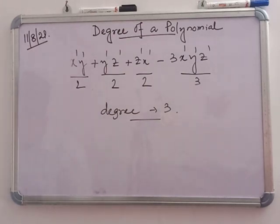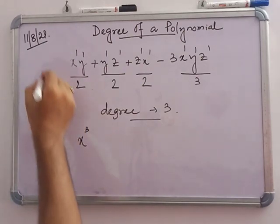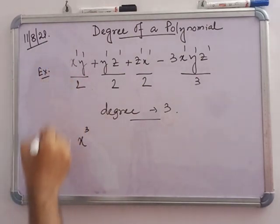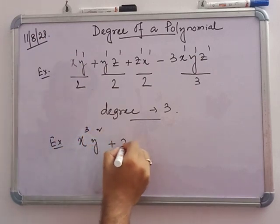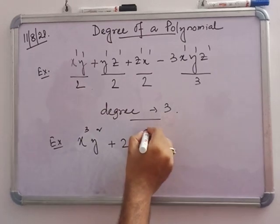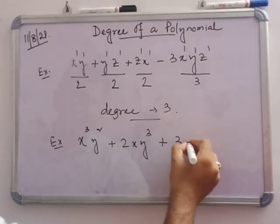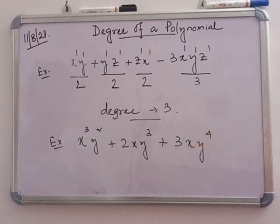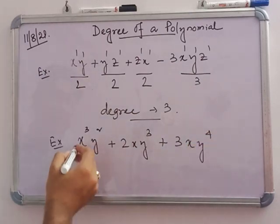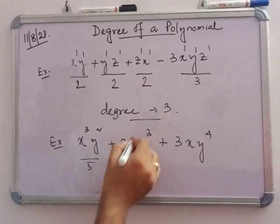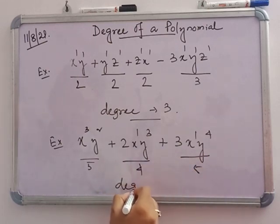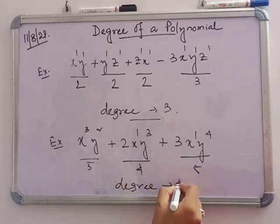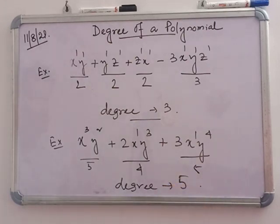For another example, consider x cubed y squared plus 2xy cubed plus 3xy to the power 4. The sum of powers for the first term is 5, for the second term is 4, and for the third term is 5. So the degree is 5. This is the process for finding the degree of a polynomial.